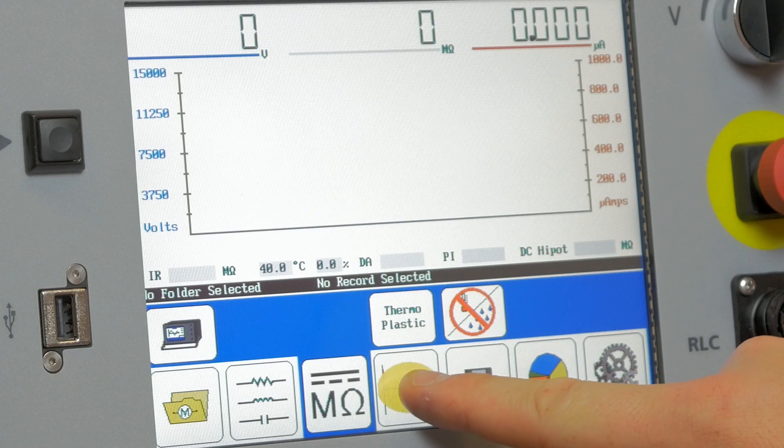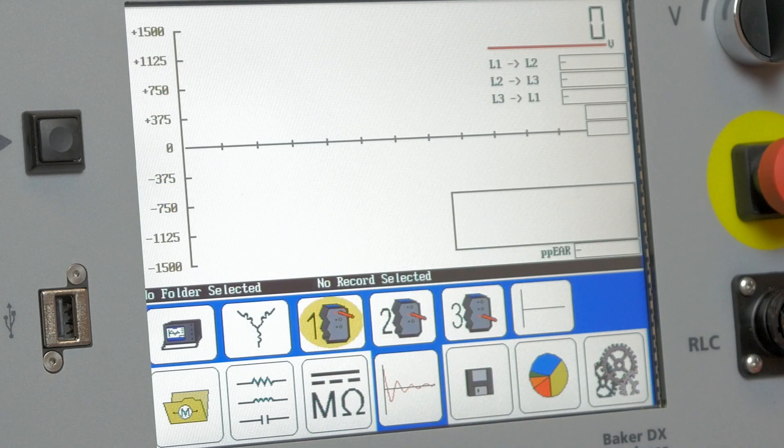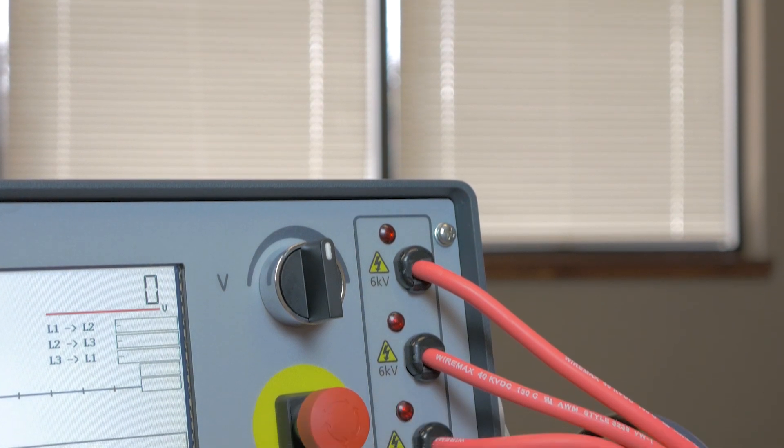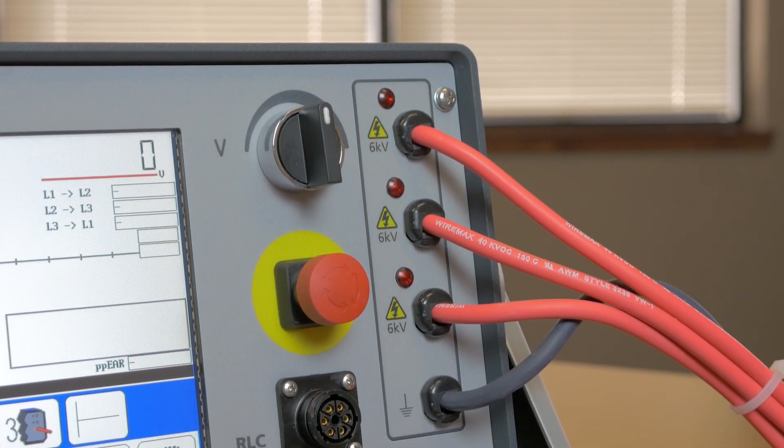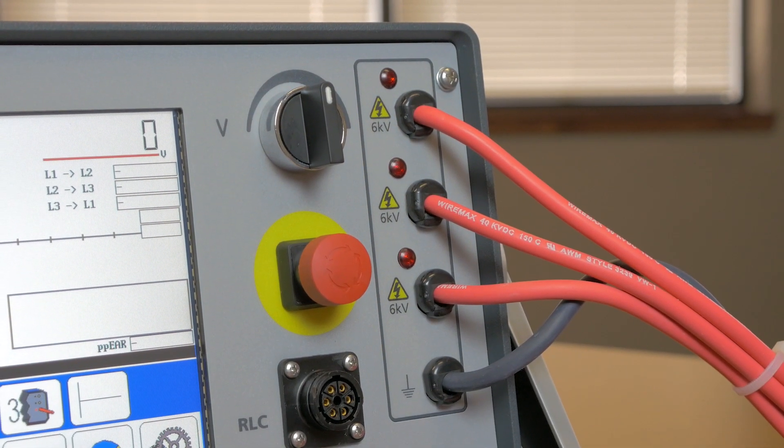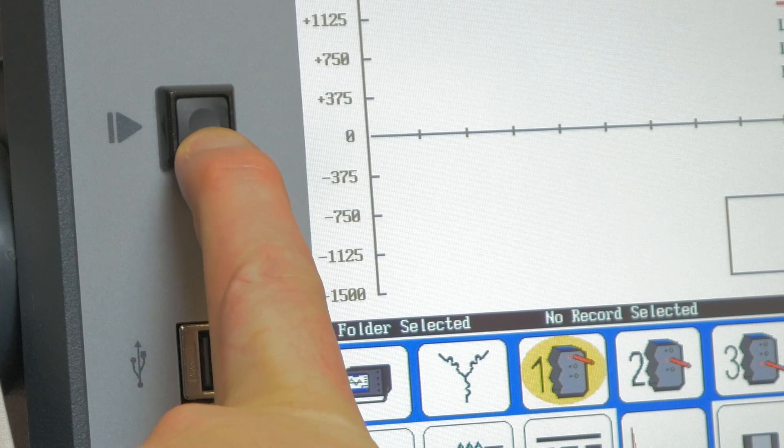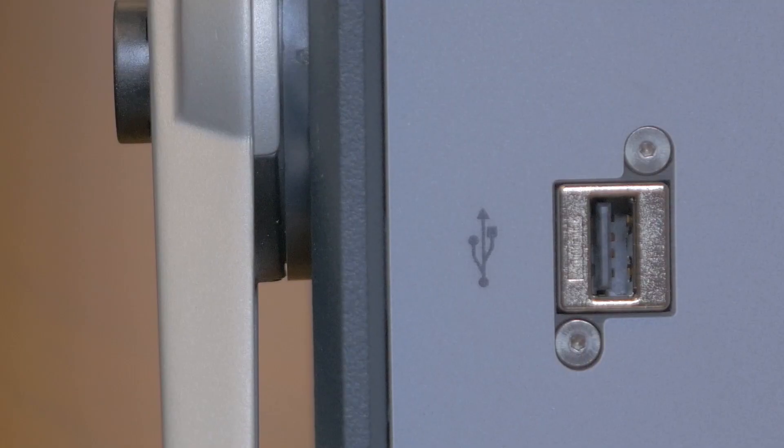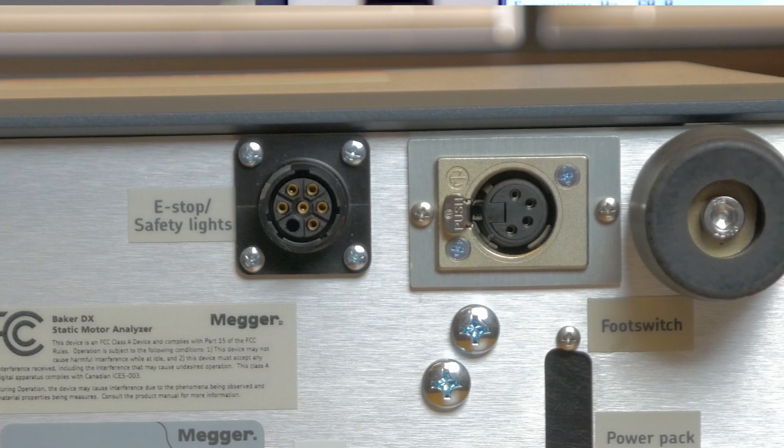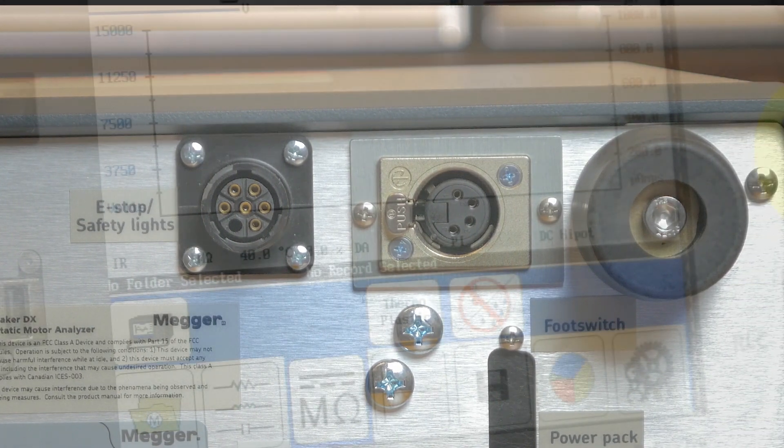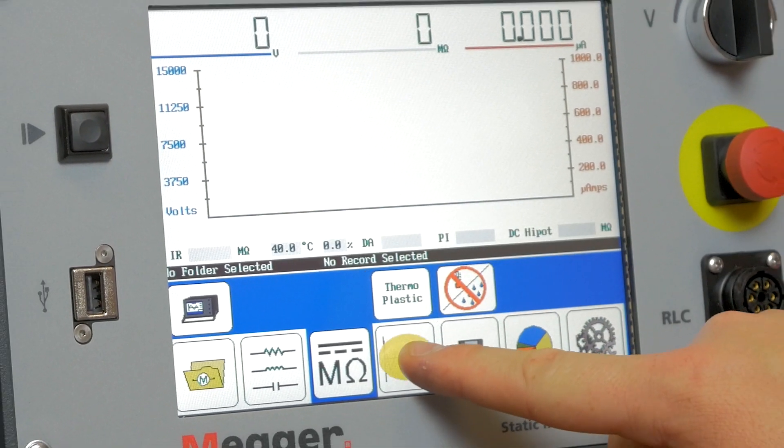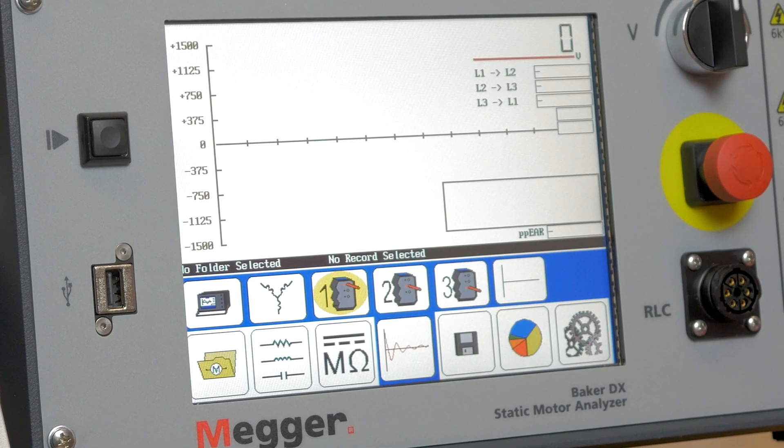The DX uses a color touchscreen interface, usable in direct sunlight and with gloves on. It has three switched high voltage test leads, a voltage adjust knob, a push to test button and a USB port for printer and data export. Ports are also provided for a foot switch and safety lights. There is no keyboard option so all actions are taken on the touchscreen.